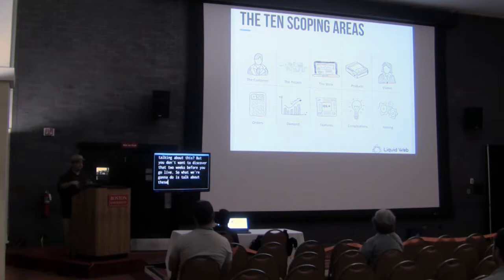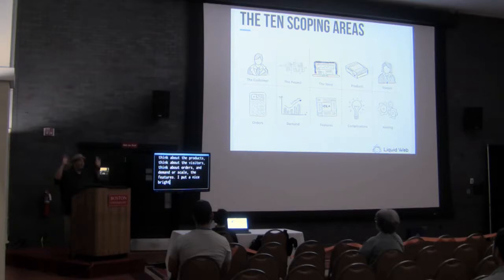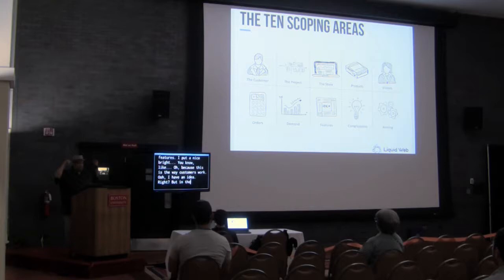So what we're going to do is talk about these 10 scoping areas: understand the customer, understand the project, understand the store, think about products, think about the visitors, think about orders and demand, and the features. Customers often have that 'ooh, I have an idea' moment — but in the end it feels like a complication. And then there's post-launch.